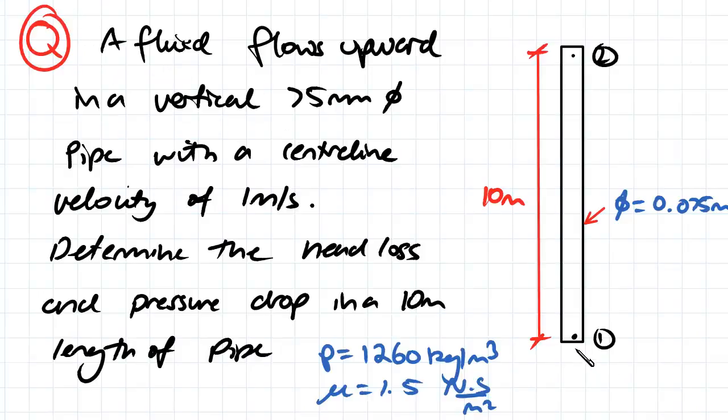So here's our question. We've got a fluid that flows upward from point one to point two. The pipe itself has a diameter of 75 millimeters and the velocity at the centerline is one meter per second.